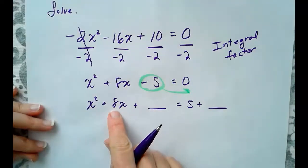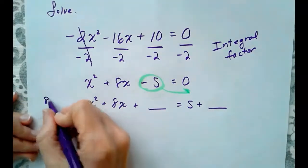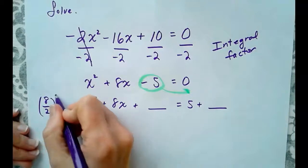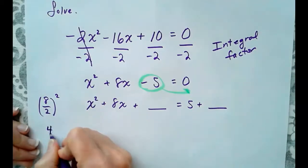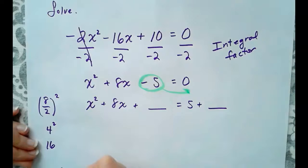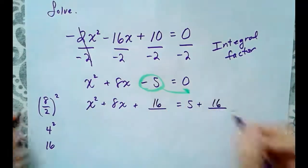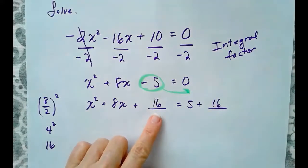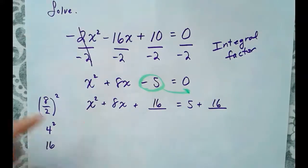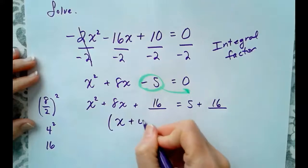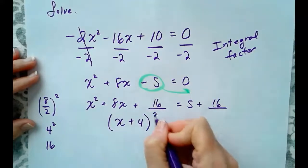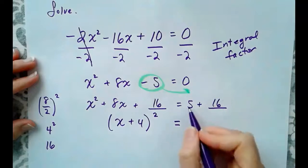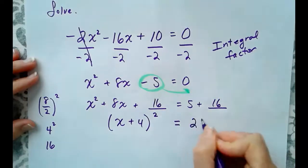Go to the middle term. Take the middle term, which is 8, divide it by 2, and then square. So, 8 over 2 is 4, and 4² is 16. We are going to add 16 to both sides, which creates a perfect square trinomial that is now easily factored. Factors of positive 16 that add up to positive 8 are a positive 4 and a positive 4. So, (x + 4)² equals 5 + 16, which is 21.